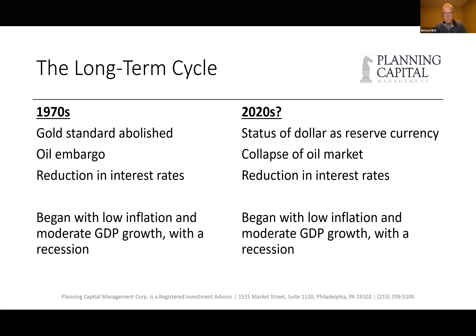The four basic components of growth in GDP are: consumption, investment — which is investment in business, plant equipment, and housing — government spending, and net exports. Once consumption stops happening, then investments stop happening. When those two pieces go, the government starts to pick up spending. And when there's pushback on that level of Fed involvement, the only other alternative is a devaluing currency.